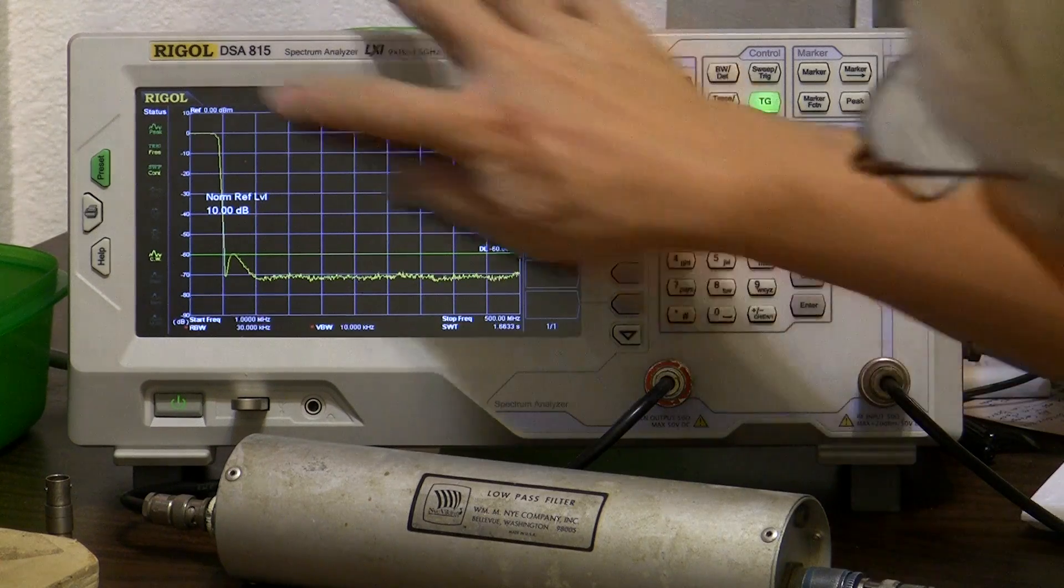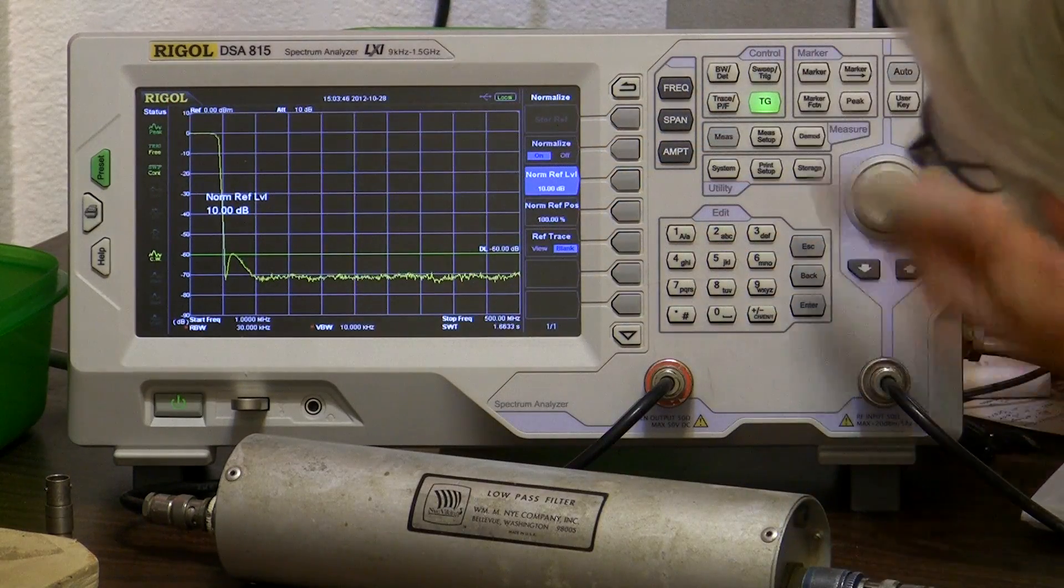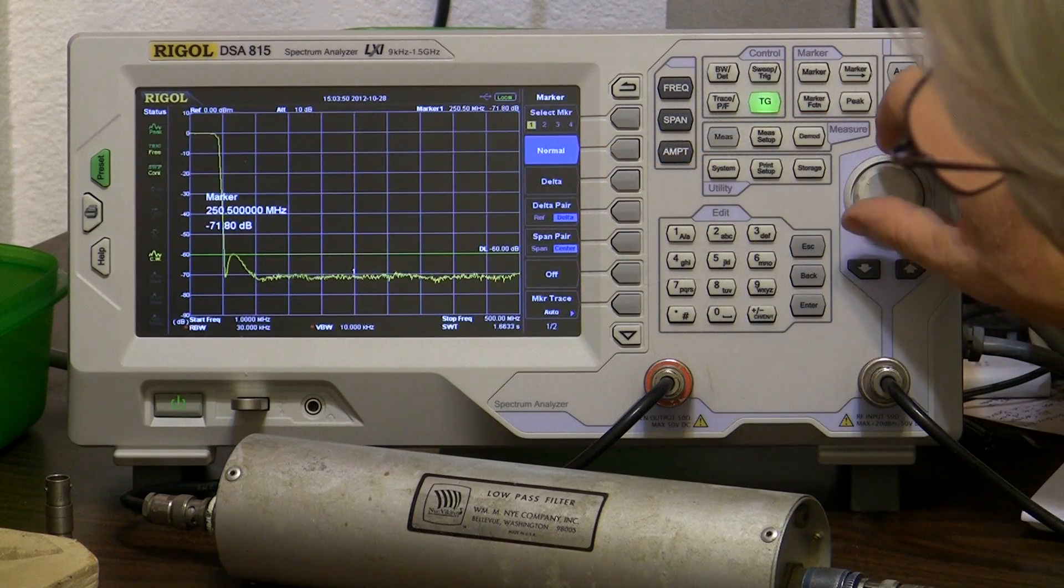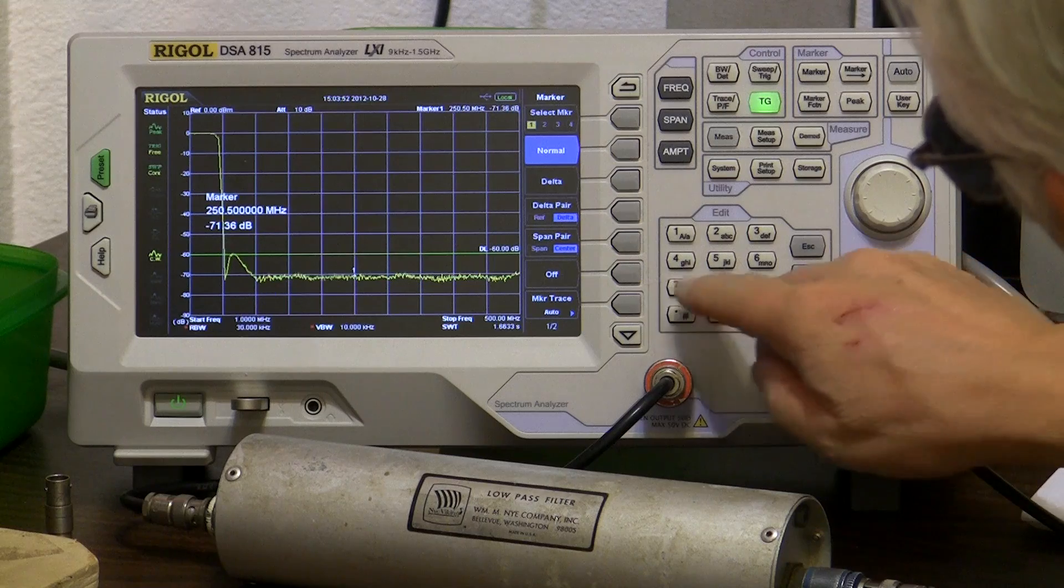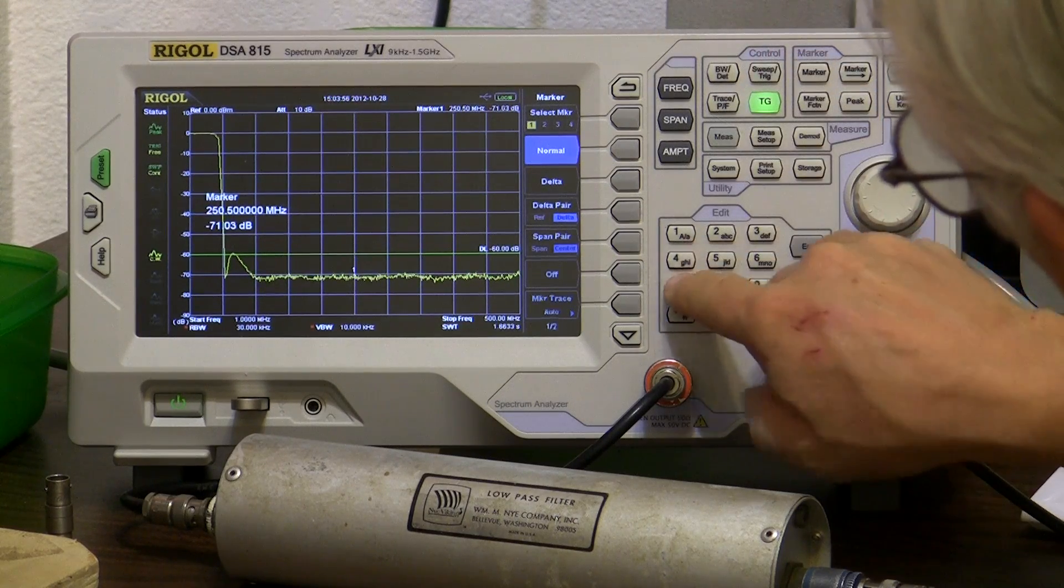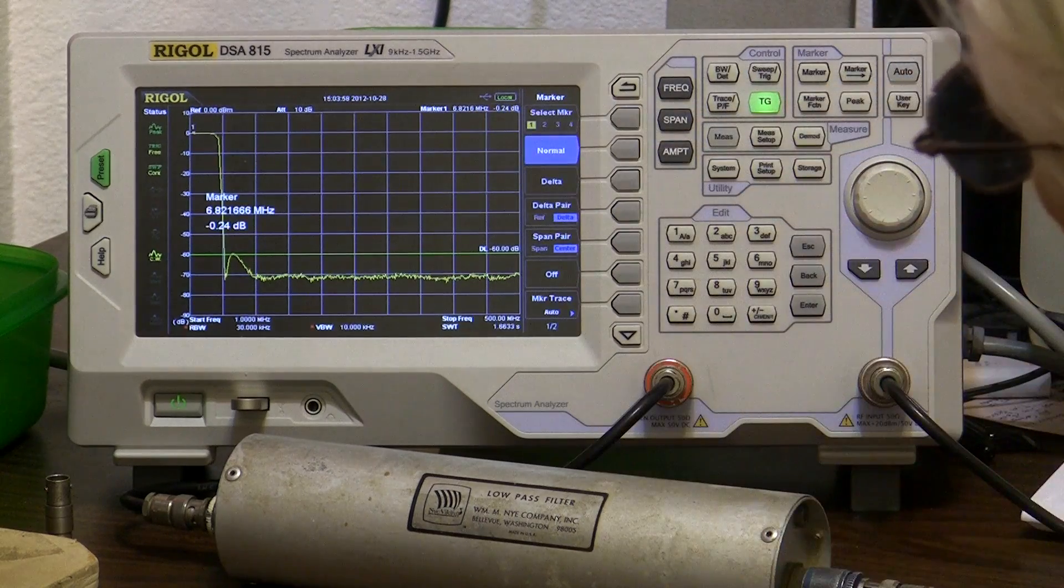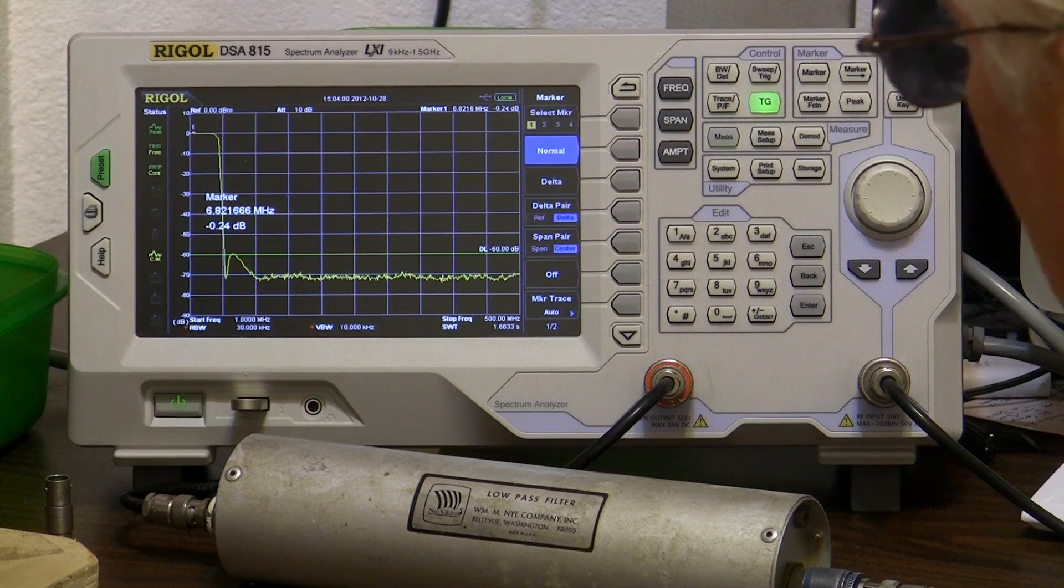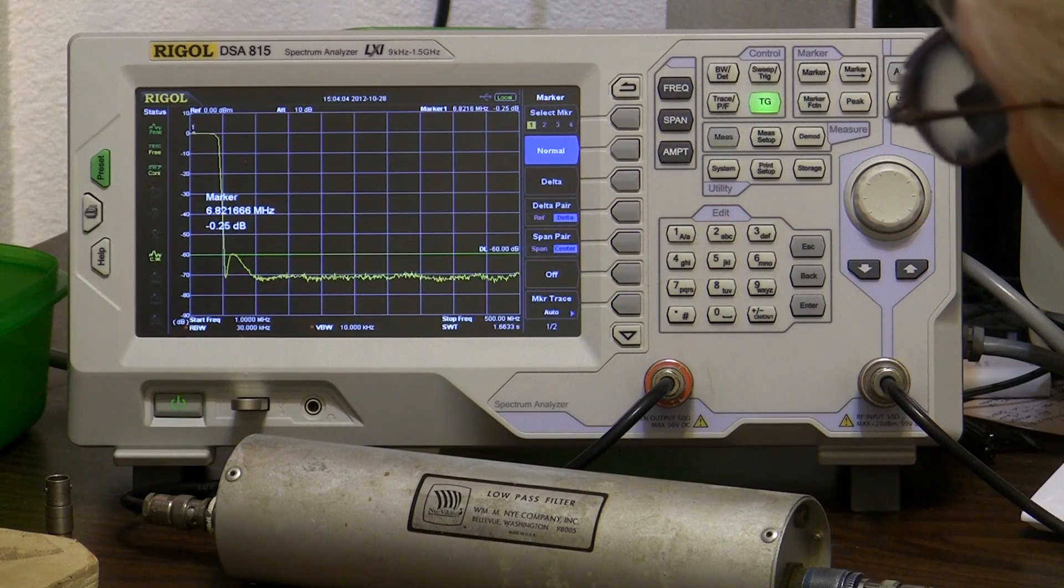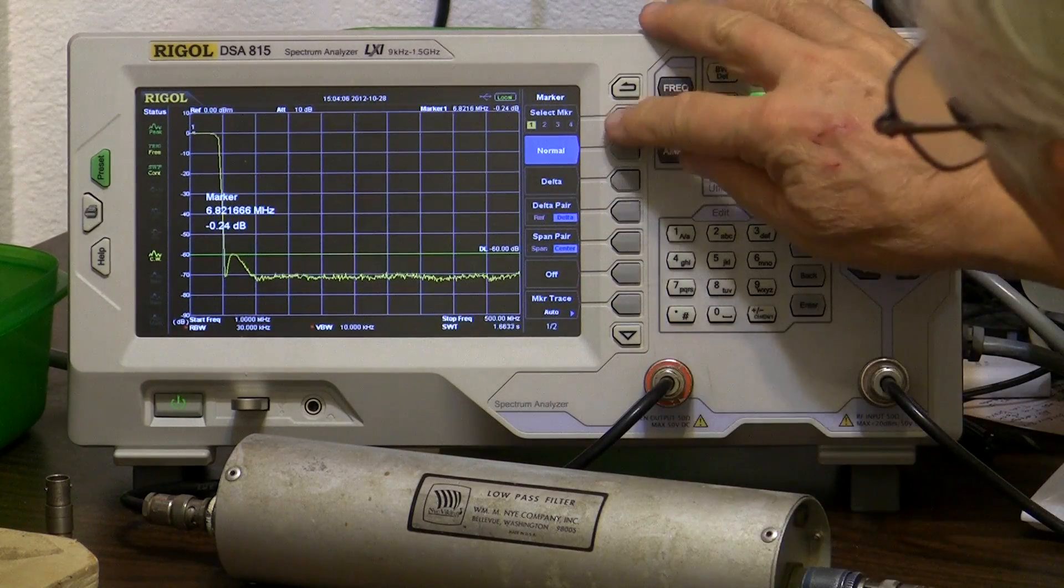So let's find out where we are here. Get a marker. Number one is on and normal, and we'll put it at say seven megahertz. So marker 7 megahertz. There's the 40 meter band. We have 0.24 dB of loss at the 40 meter band, which is fine, it's within the spec I'm sure.